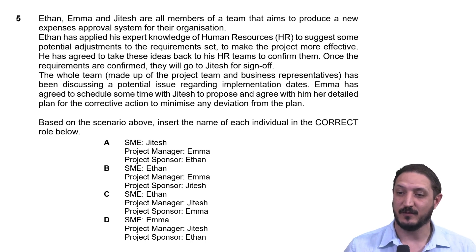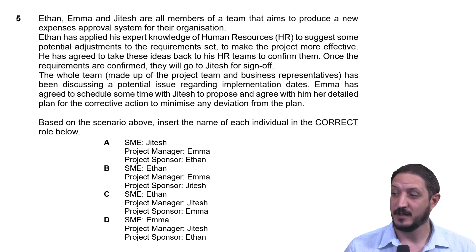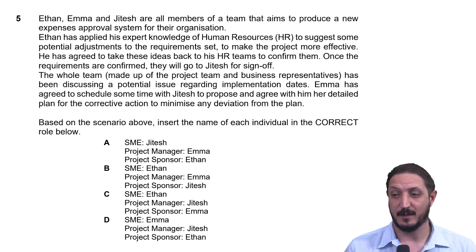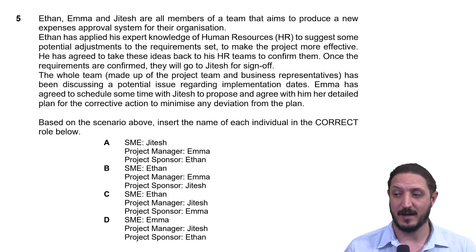The question tells us that we have Ethan, Emma, and Jitesh, who are all members of a team aiming to produce a new expenses approval system for their organization. Ethan has applied his expert knowledge of human resources to suggest some potential adjustments to the requirements set to make the project more effective. He has agreed to take these ideas back to his HR teams to confirm them. Once the requirements are confirmed, they will go to Jitesh for sign-off. The whole team, made up of the project team and business representatives, have been discussing a potential issue regarding implementation dates. Emma has agreed to schedule some time with Jitesh to propose and agree with him her detailed plan for corrective action to minimize any deviation from the plan.